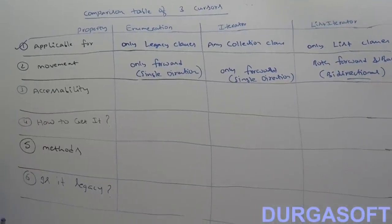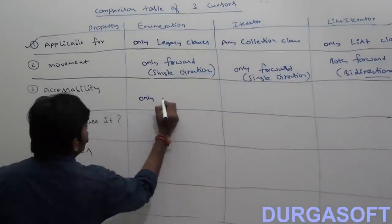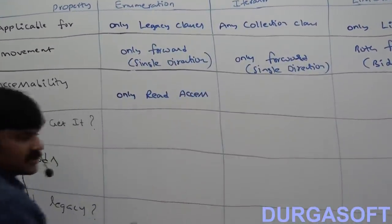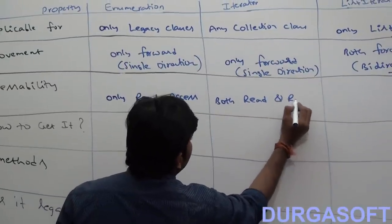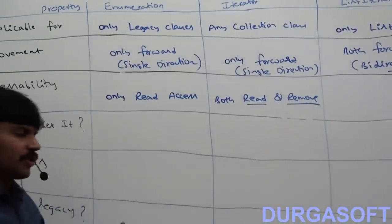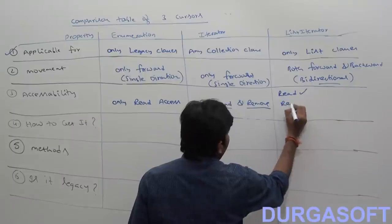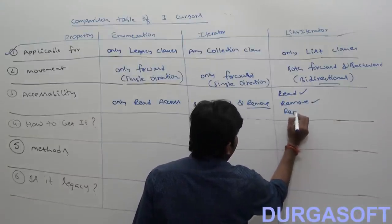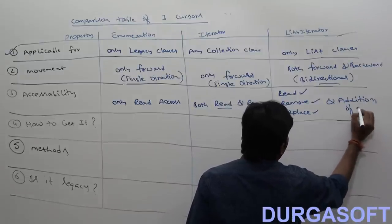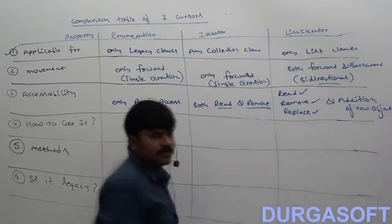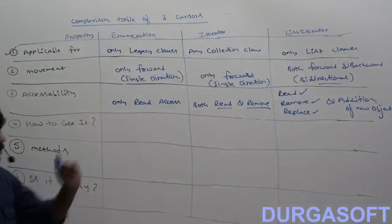Next property is accessibility — what type of access permissions are there? With enumeration, we have only read access. But with iterator, both read and remove — only two access permissions. But what about list iterator? We can perform read, remove, replace, and addition of new objects. So list iterator has the most capability.